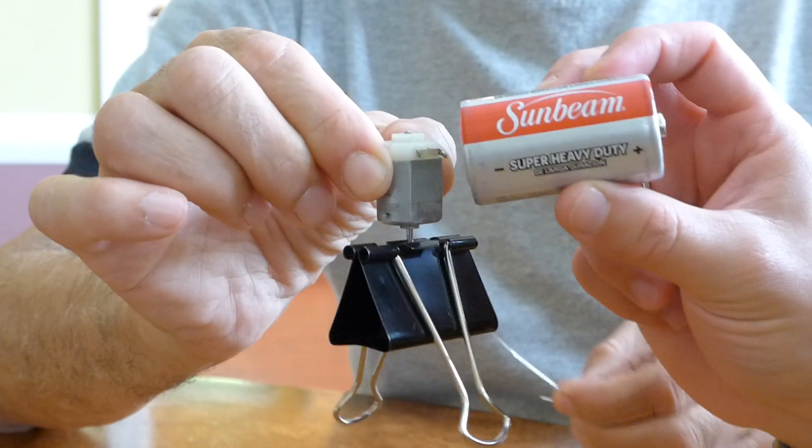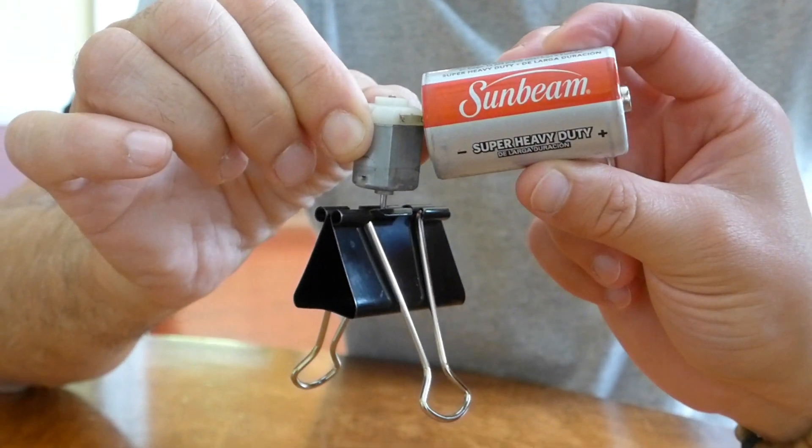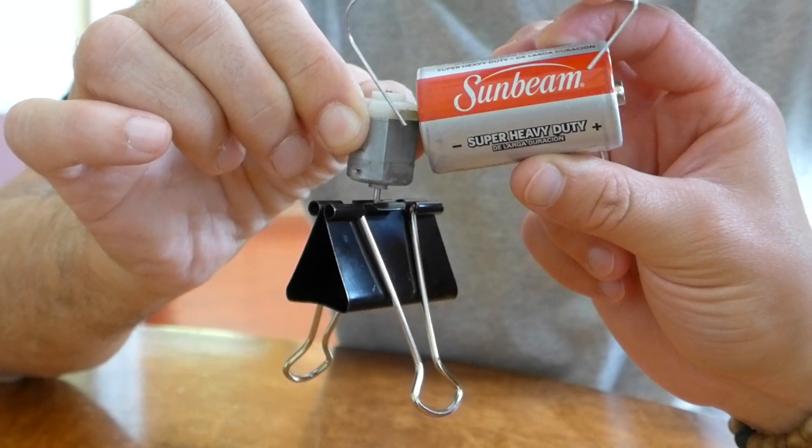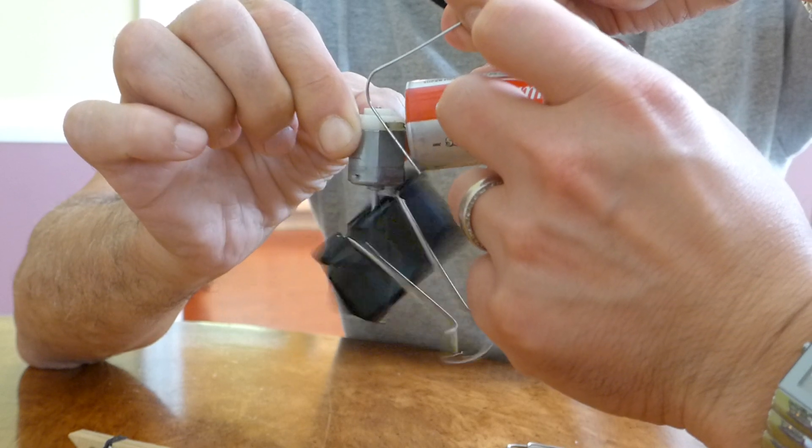So here we have the DC motor, and we're going to touch it to the negative of the battery, and then we will connect the other terminal here to, use your finger there to put that on the positive, or there you go, turn clockwise.